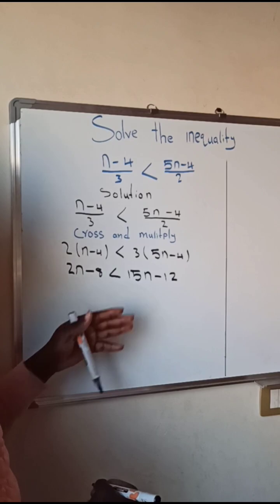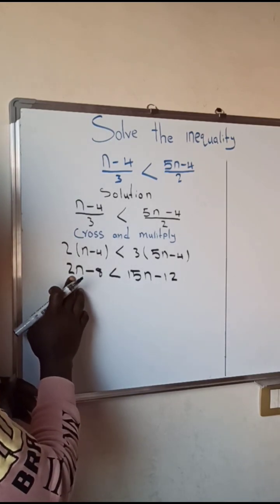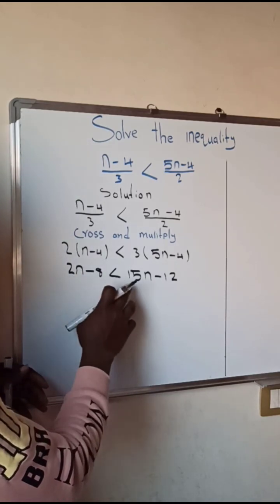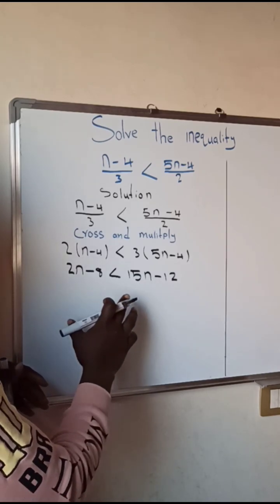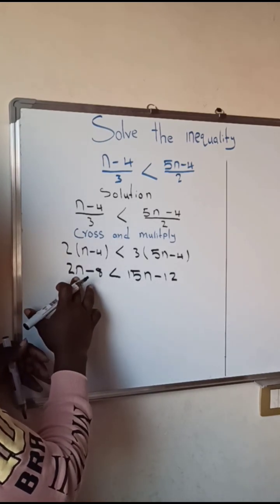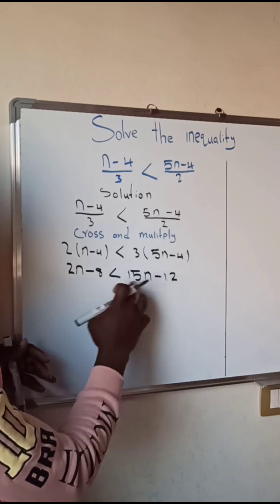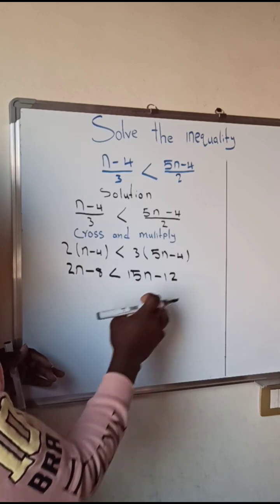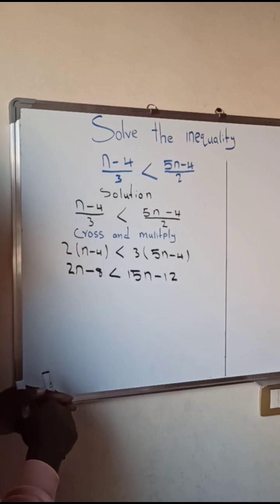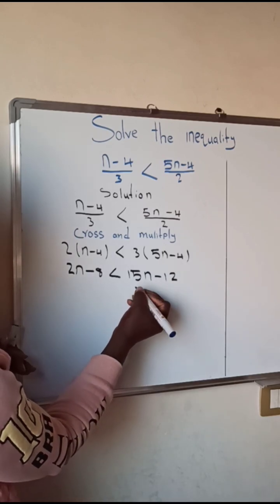So here as you can see right now we have here n with the coefficient of 2 and here also we have n with the coefficient of 15. So we have here some like terms: 2n and 15n are like terms, and we have here negative 8 and negative 12 are like terms. So the next thing we're going to do here is to bring this positive 15n to this side and this negative 8 to this side.